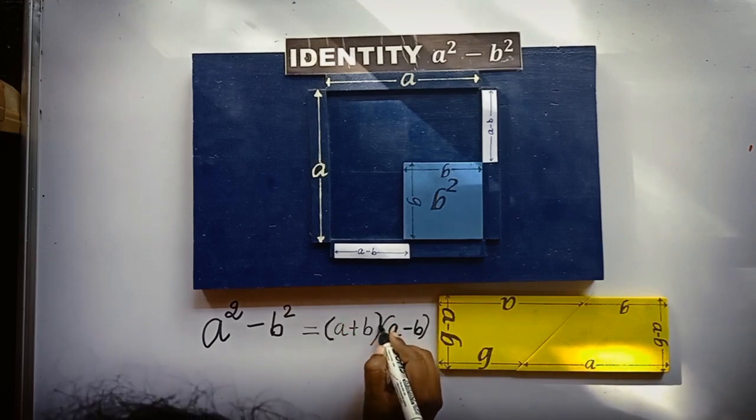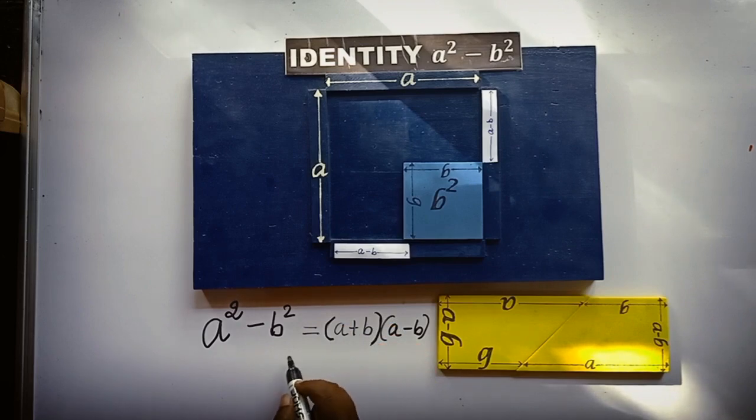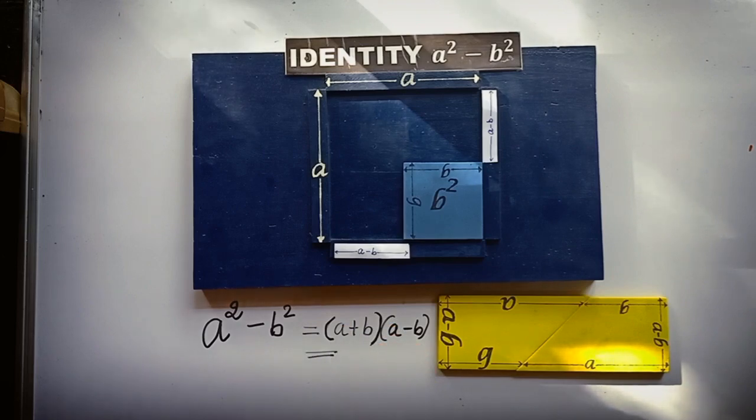So, A square minus B square is equal to A plus B into A minus B.